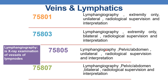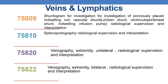CPT 75807 is lymphangiography, pelvis or abdomen, bilateral, radiological supervision and interpretation. CPT 75809 is shuntogram for investigation of a previously placed indwelling non-vascular shunt — for example, a leave-in shunt, ventriculoperitoneal shunt, or indwelling infusion pump — radiological supervision and interpretation.